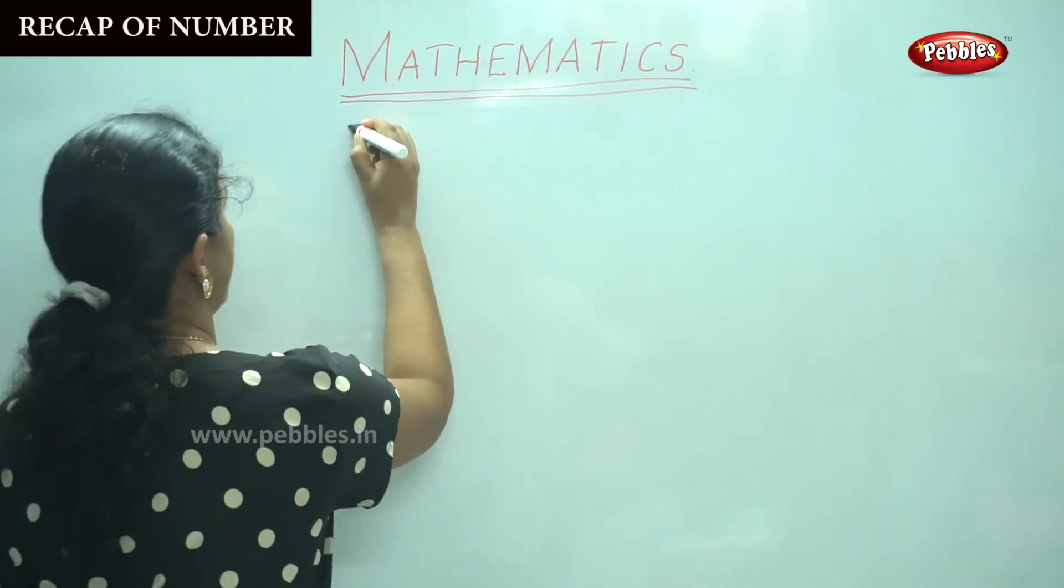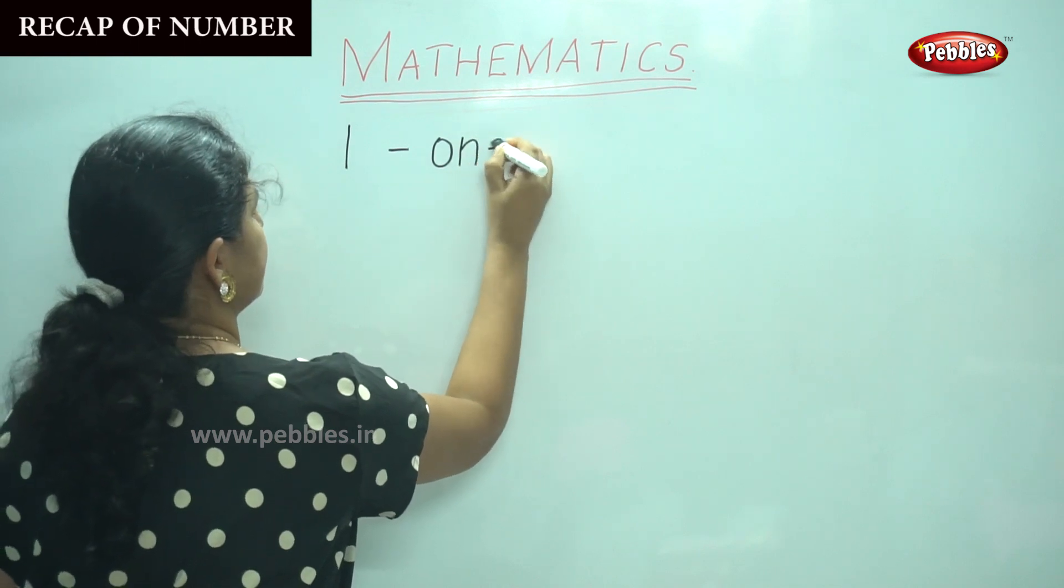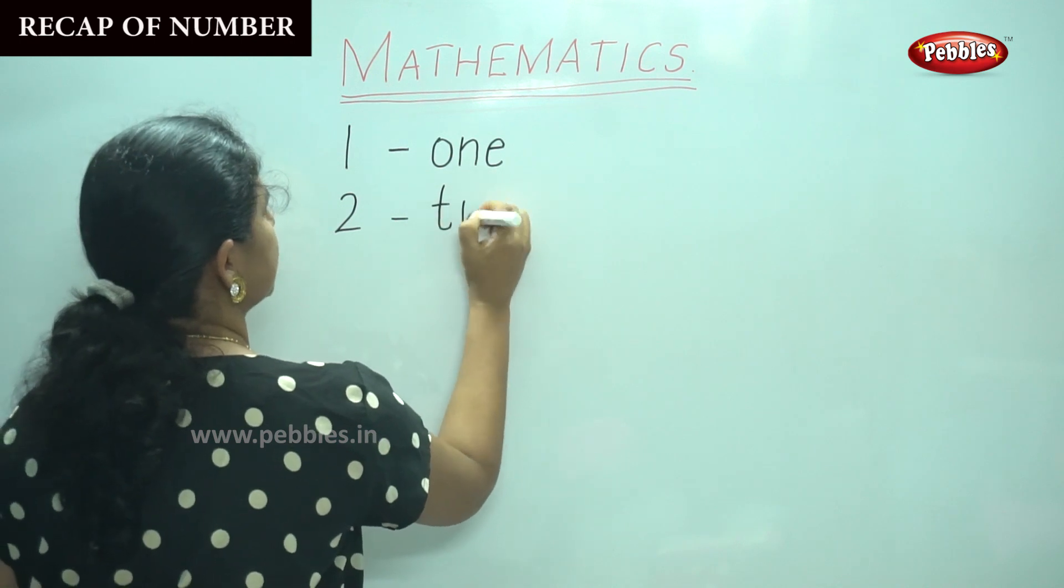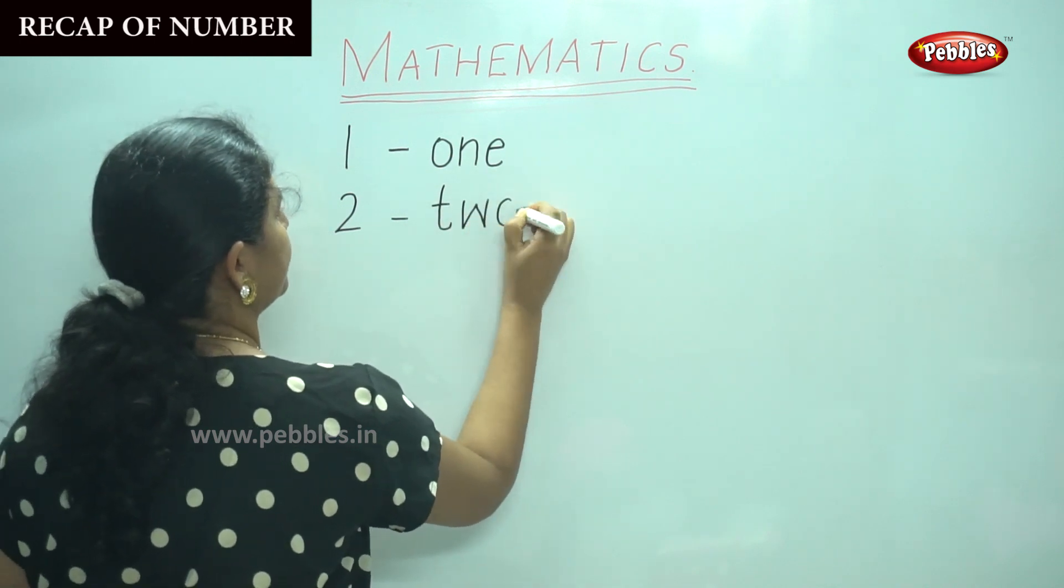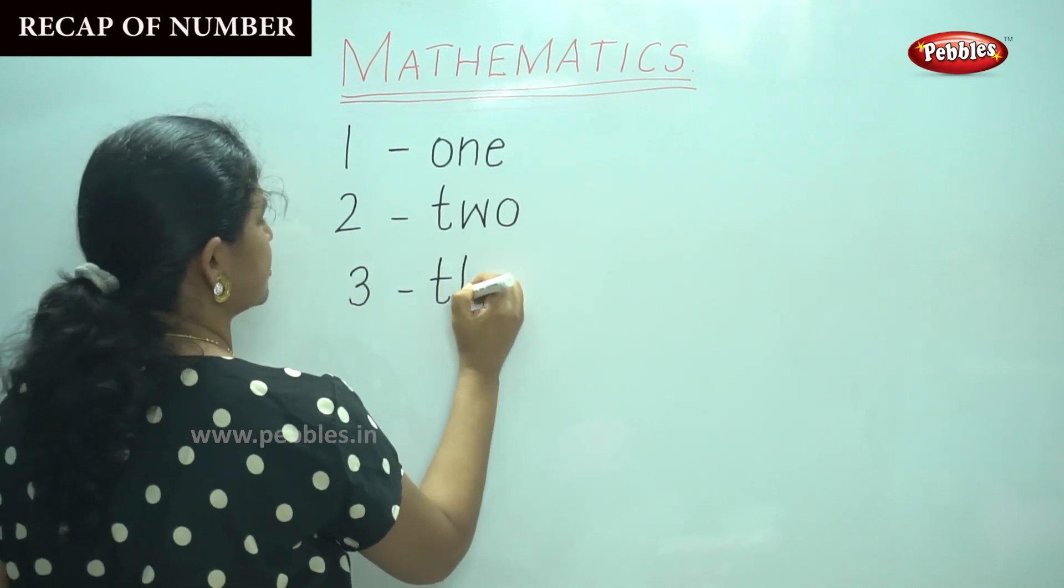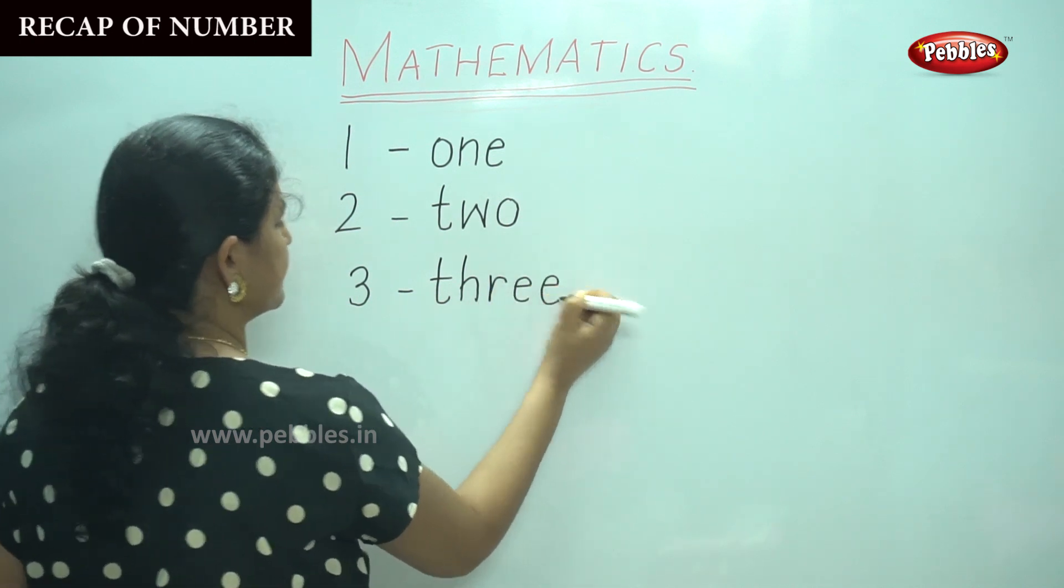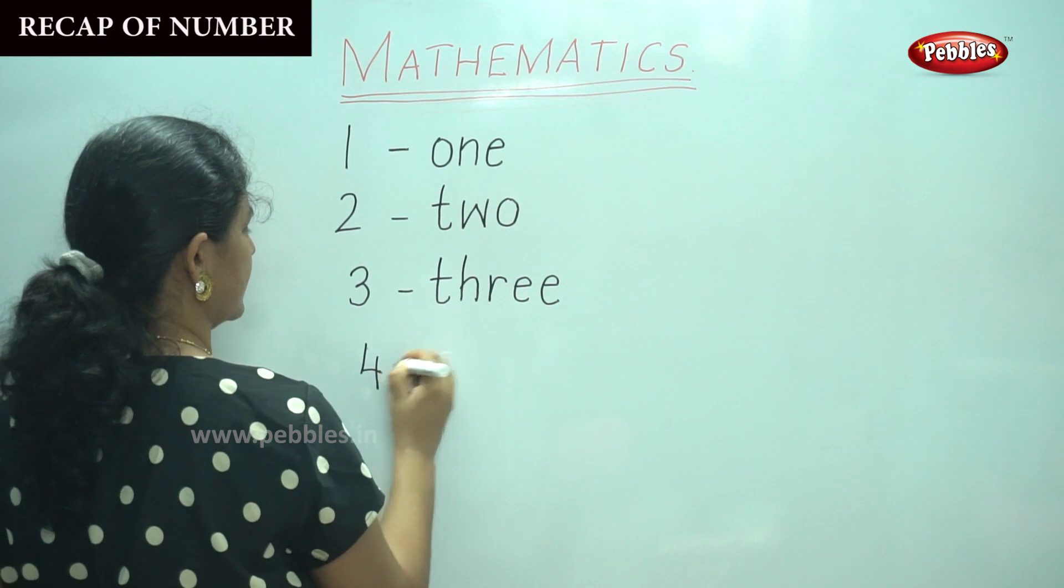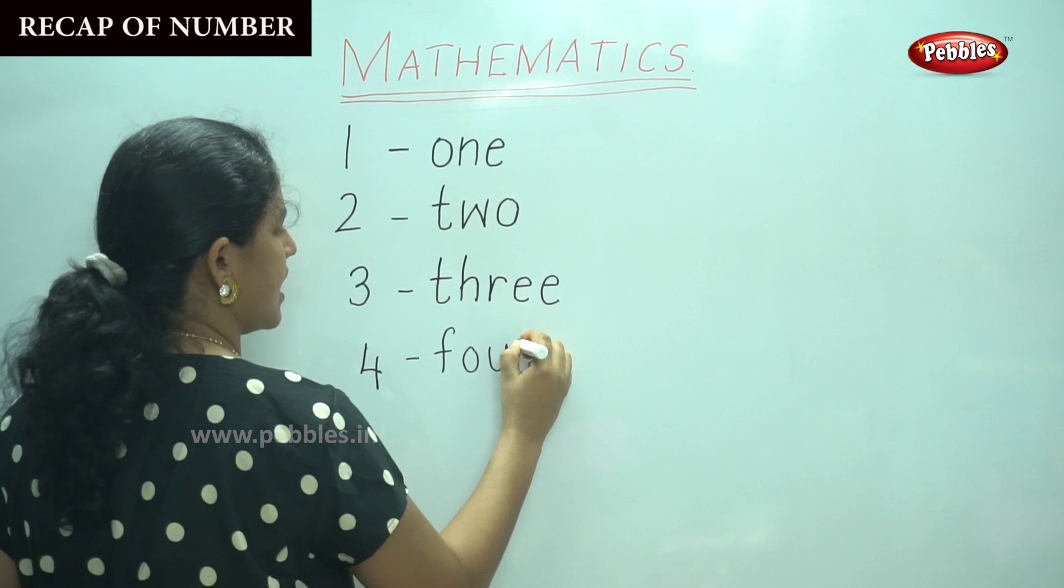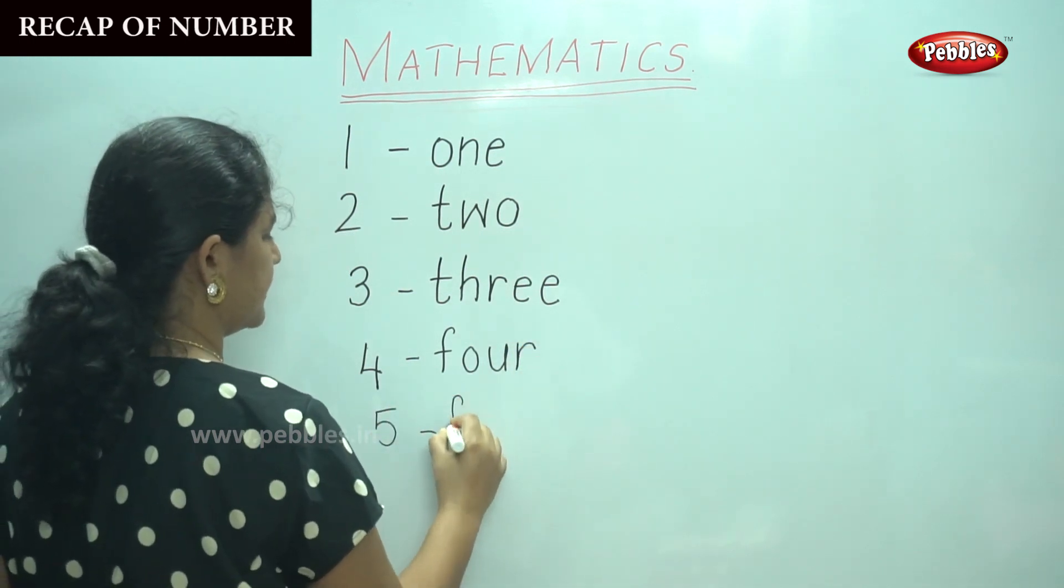So number 1 it is O-N-E, 2 T-W-O, 3 T-H-R-E-E, 4 F-O-U-R.